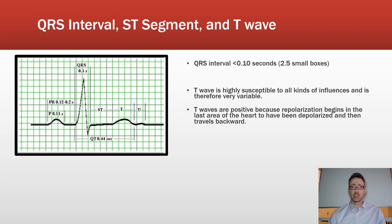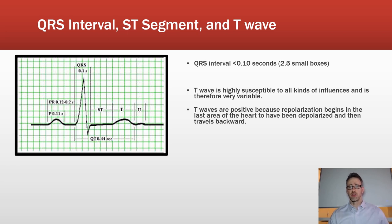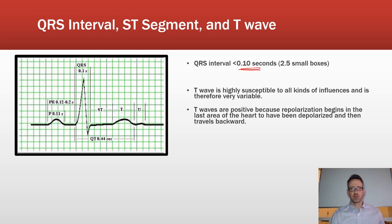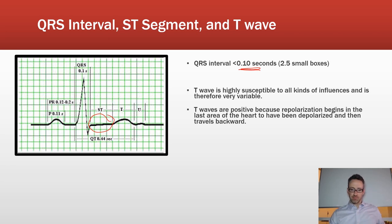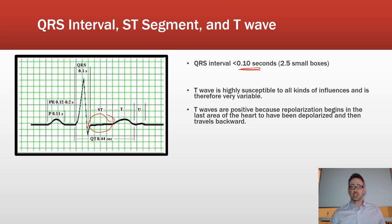The QRS duration is normally less than 0.1 seconds — about two and a half small boxes — so it's very quick. Following the QRS, the ST segment returns to baseline, which reflects a uniform charge on the outside of the ventricles after depolarization. Since there's no current difference, the electrodes detect no activity and record an isoelectric flat line.